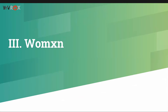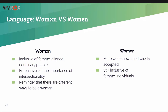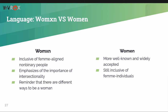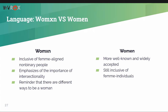Section three: let's talk about women. First, a note on language — you may have noticed we've been spelling women with an X instead of an E. Women spelled with an X includes not only binary women but also feminine-aligned non-binary people. It emphasizes the importance of including anyone who has the role of a woman or is perceived as a woman, because they often face the same issues. It also encourages people to think of all the different ways someone can be a woman.